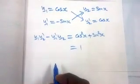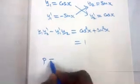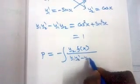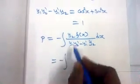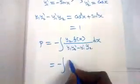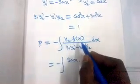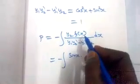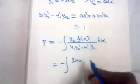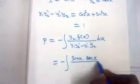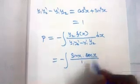Now for the particular integral, I am going to find capital P. Capital P = −∫[y2·f(x) / (y1·y2' − y1'·y2)] dx. So this becomes −∫[sin(x) · sec(x) / 1] dx. Here f(x) is the right-hand side of the given equation, which is sec(x). The denominator is 1.